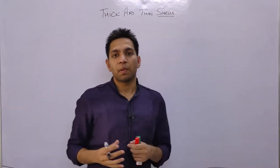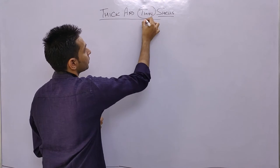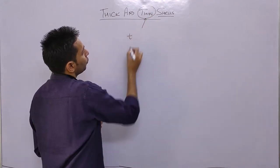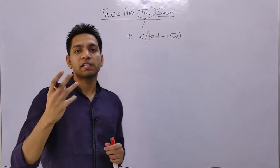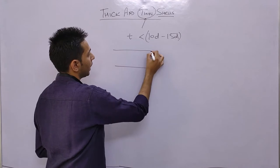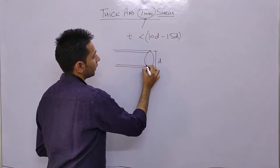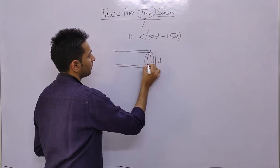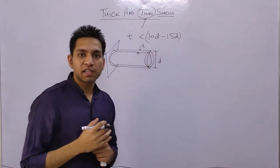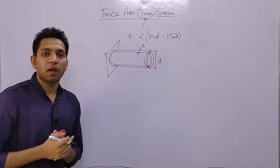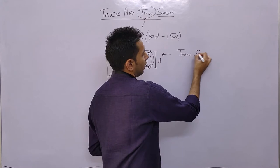A shell is a member whose thickness is very small as compared to its diameter. Questions asked from this chapter are mainly from thin shells, in which the thickness is less than 1/10th to 1/15th of the diameter of the shell, cylinder, or sphere. For example, if you have a cylinder of diameter d and thickness t, and if the thickness is less than 1/10 to 1/15 of the diameter, it is called a thin shell.